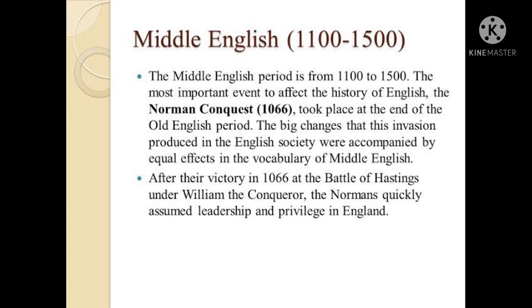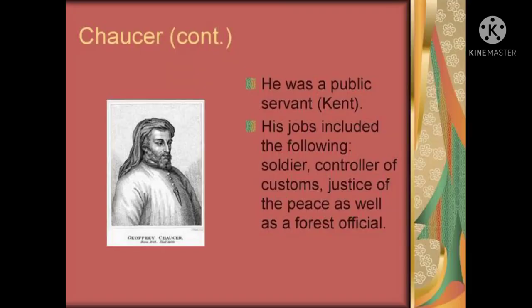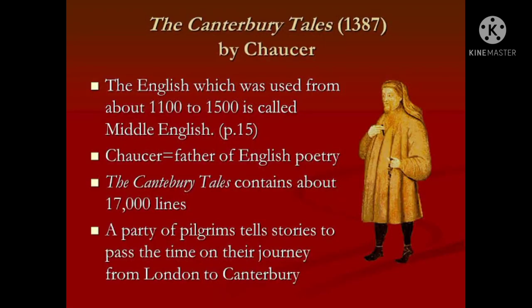After their victory in 1066 at the Battle of Hastings under William the Conqueror, the Normans quickly assumed leadership and privilege in England. The Canterbury Tales, written in 1387 by Chaucer, the father of English poetry, contains about 70,000 lines. It features 40 pilgrims telling stories to pass the time on their journey from London to Canterbury.